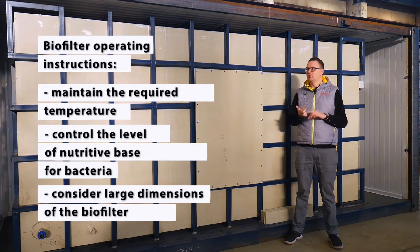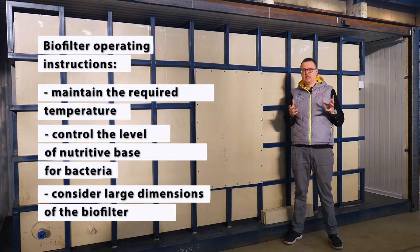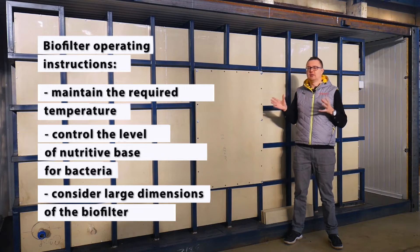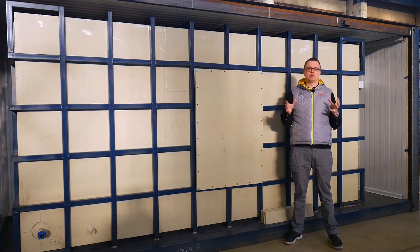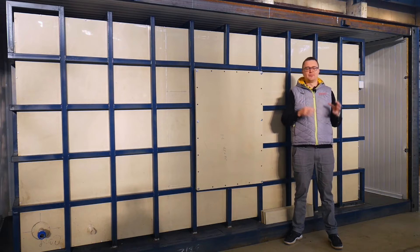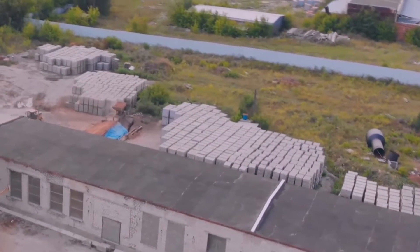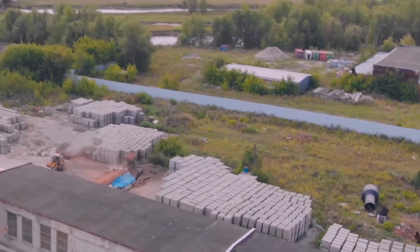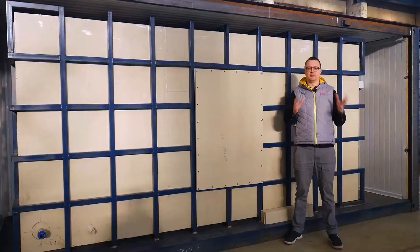Keep in mind that a biofilter is a large unit. In other words, let's say that this system has a maximum design capacity of 1,000 cubic meters of gas. Bear in mind that the biofilter cannot be installed in production areas where there is no space allocated for the filter.